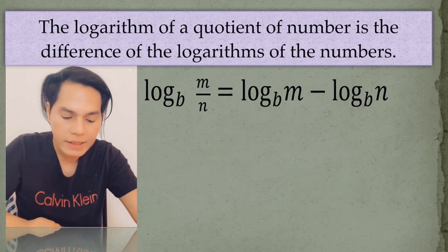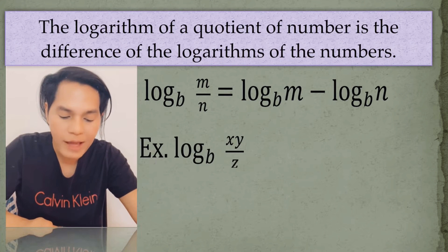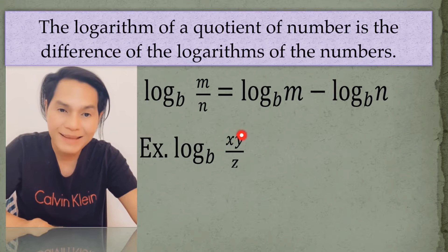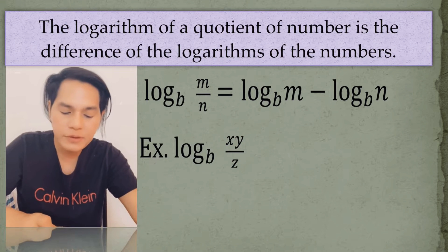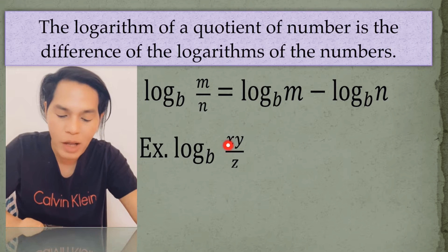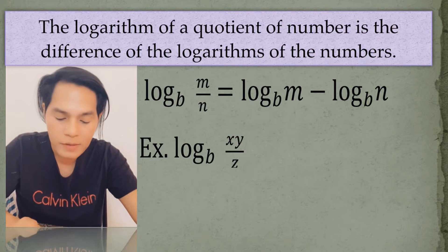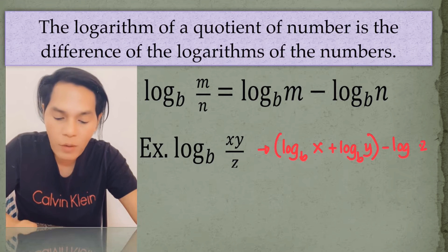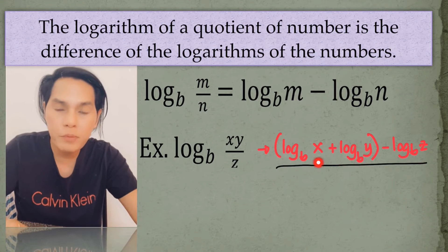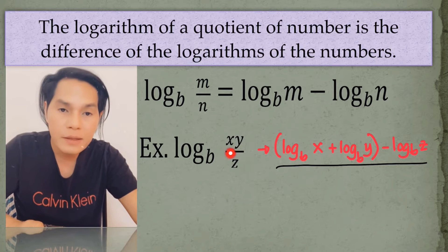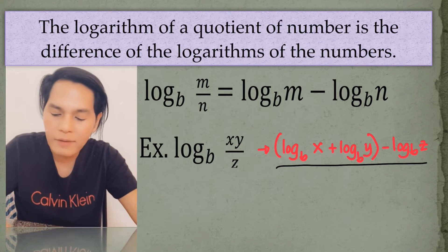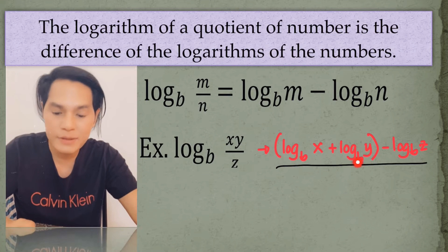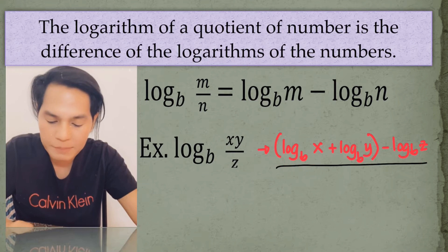The next example is the log of x·y divided by z to the base b. This is a combination of product and quotient. First, we express the product as the sum of logarithms: log of x to the base b plus log of y to the base b. We group them together before putting the minus, which represents division, giving us minus the log of z to the base b. That is the final answer since there are no expressions to simplify further.